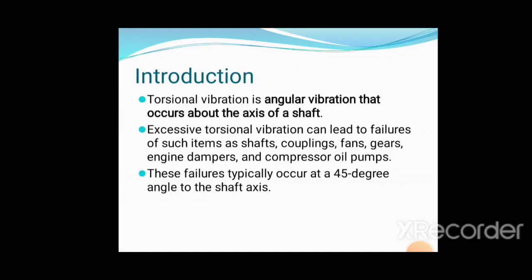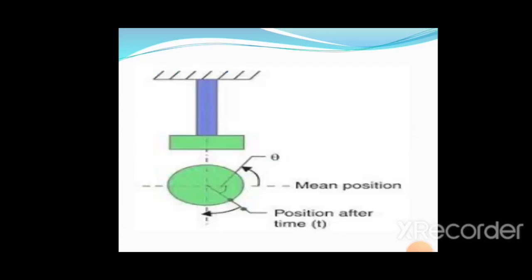In the introduction, torsional vibration is angular vibration of the shaft about its axis. Excessive torsional vibration can lead to failures of such items as shafts, couplings, fans, gears, engine dampers, and compressor oil pumps. These failures typically occur at a 45-degree angle to the shaft axis.